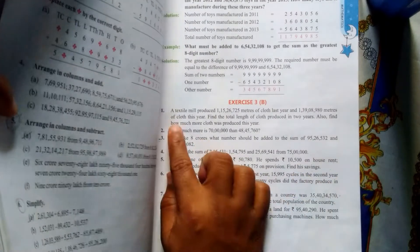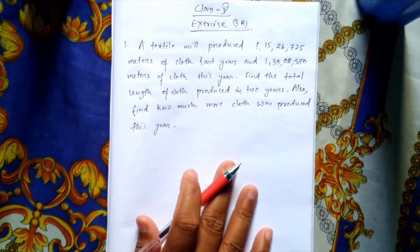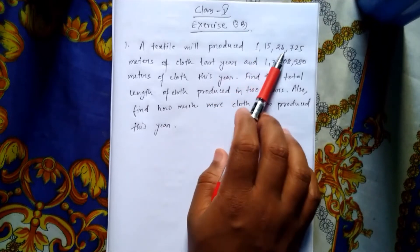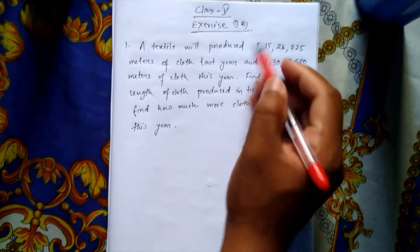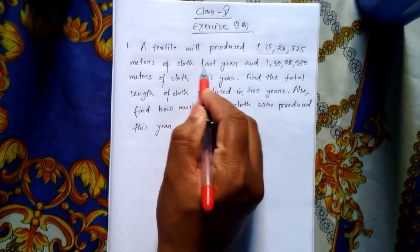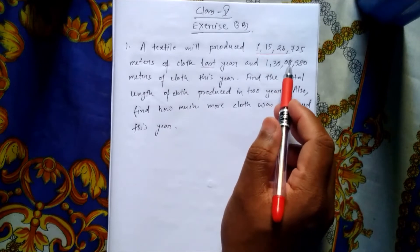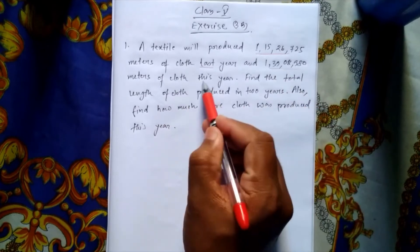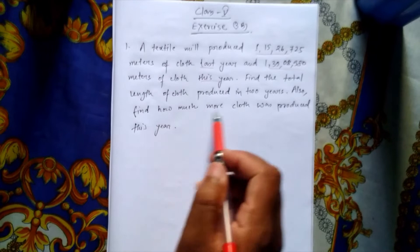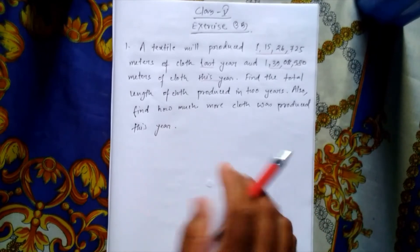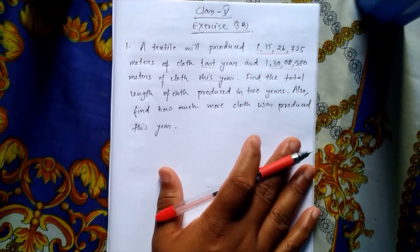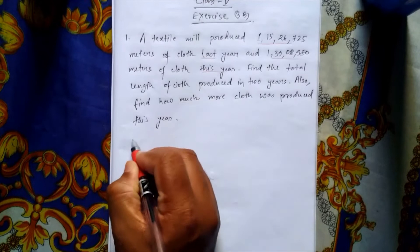Let's see the first question. The first question says: A textile mill produced 1,15,26,725 meters of cloth last year, and 1,39,08,980 meters of cloth this year. Find the total length of cloth produced in 2 years. Also, find how much more cloth was produced this year. Very simple question — if you try to understand it will be simple for you, but if you just read it randomly without understanding, then it will be a problem.